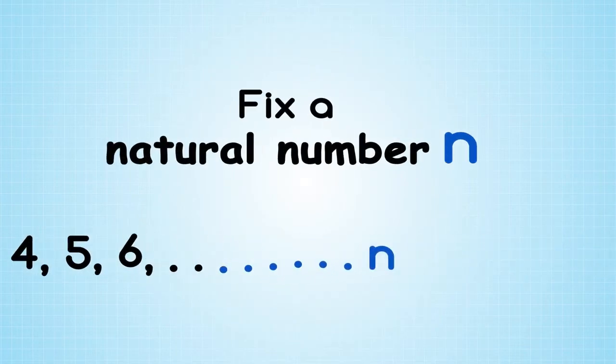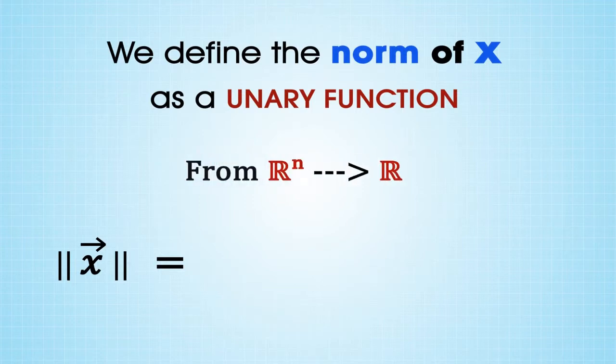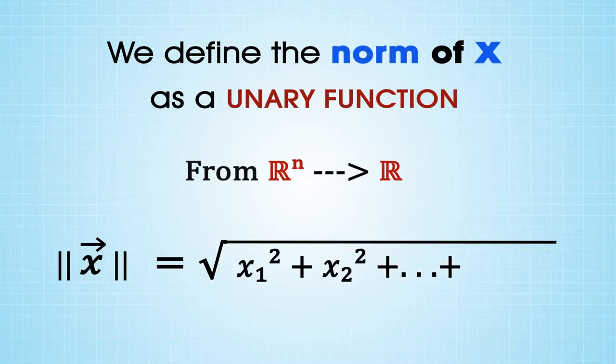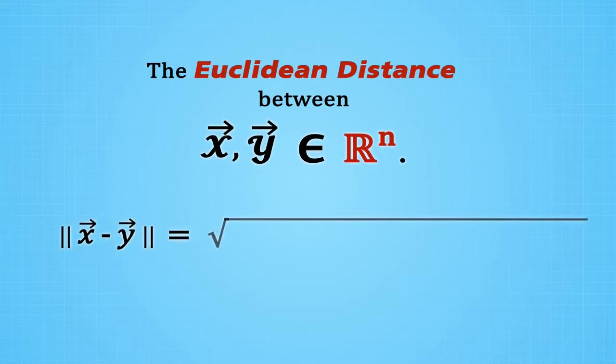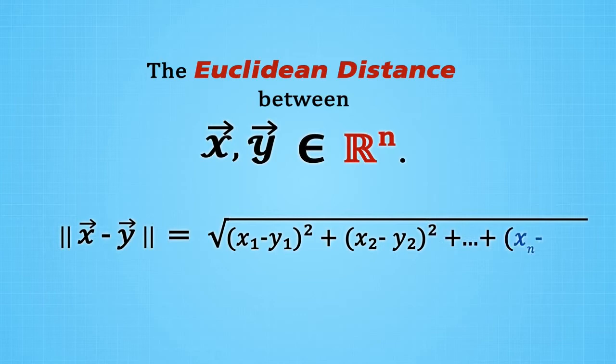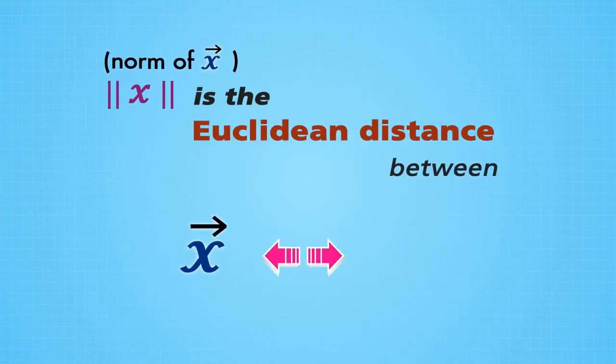Fix a natural number n. We define the norm of x as a unary function from R^n to R as the square root of x1 squared plus x2 squared up to xn squared. For vectors x and y in R^n, the Euclidean distance between x and y is the norm of x minus y, or the square root of (x1 minus y1) squared plus (x2 minus y2) squared up to (xn minus yn) squared. So in particular, the norm of x is the Euclidean distance between x and the zero vector, or vector of all zeros.